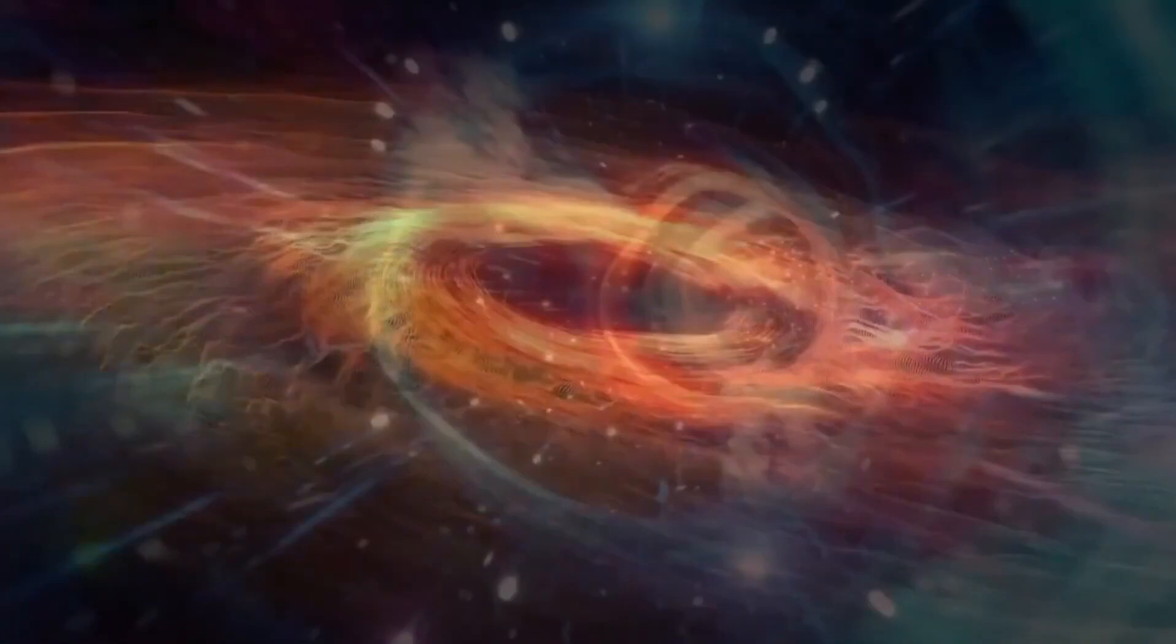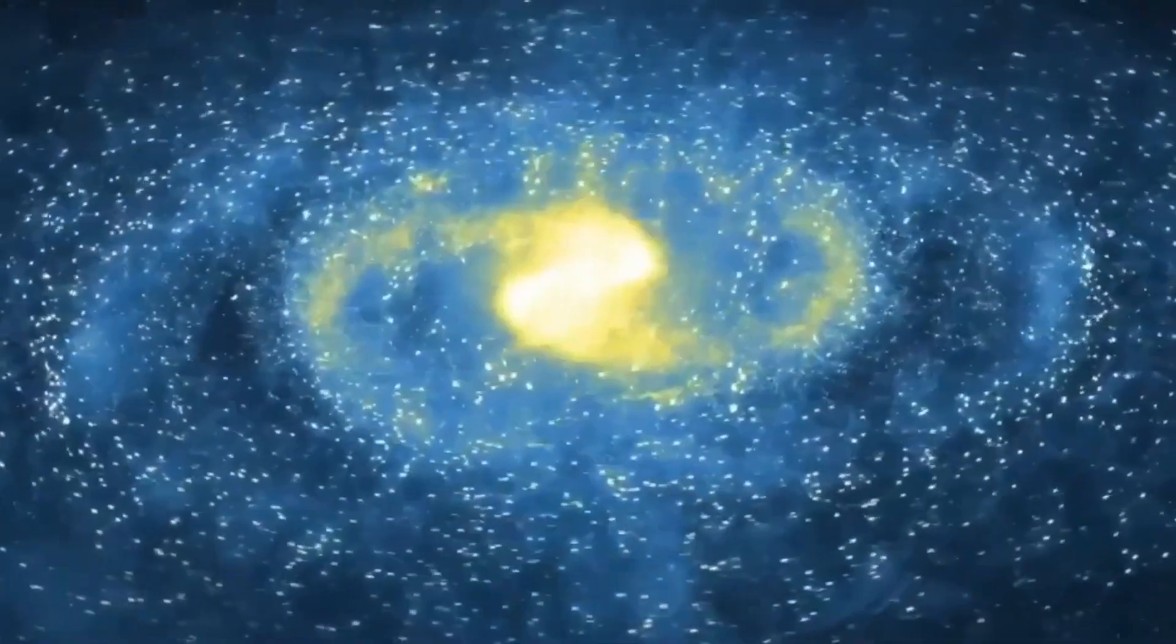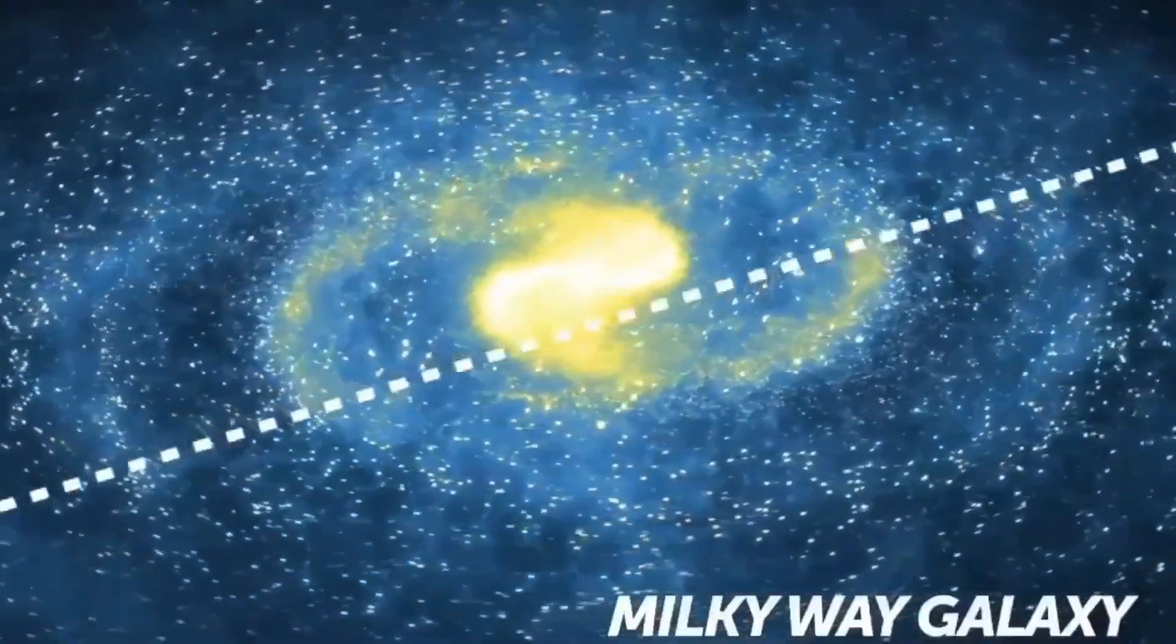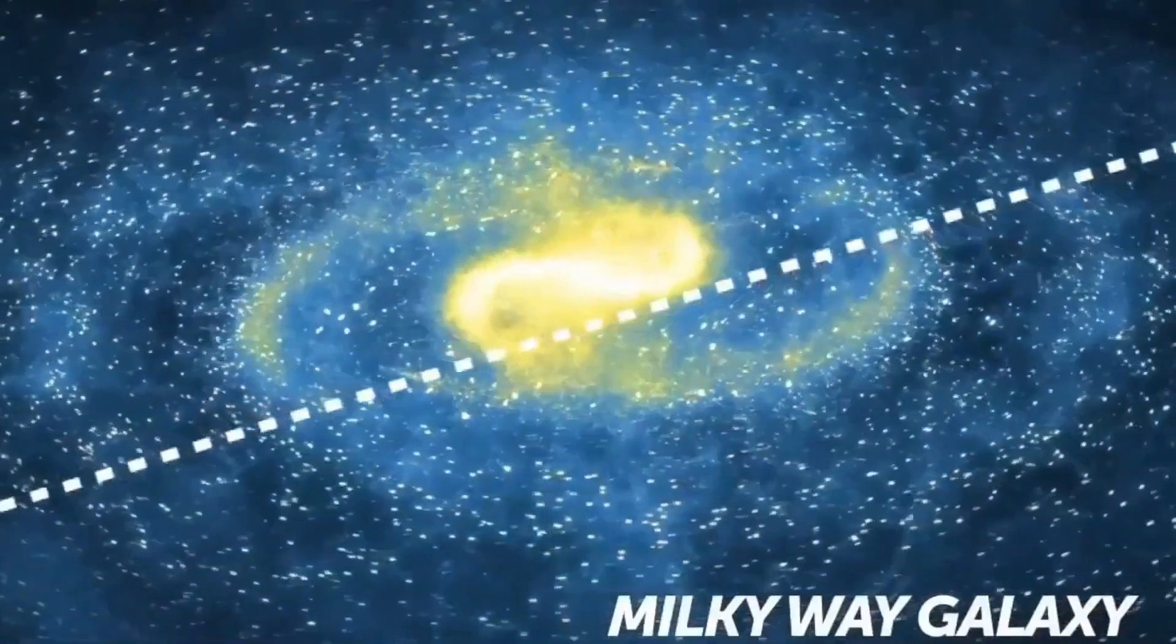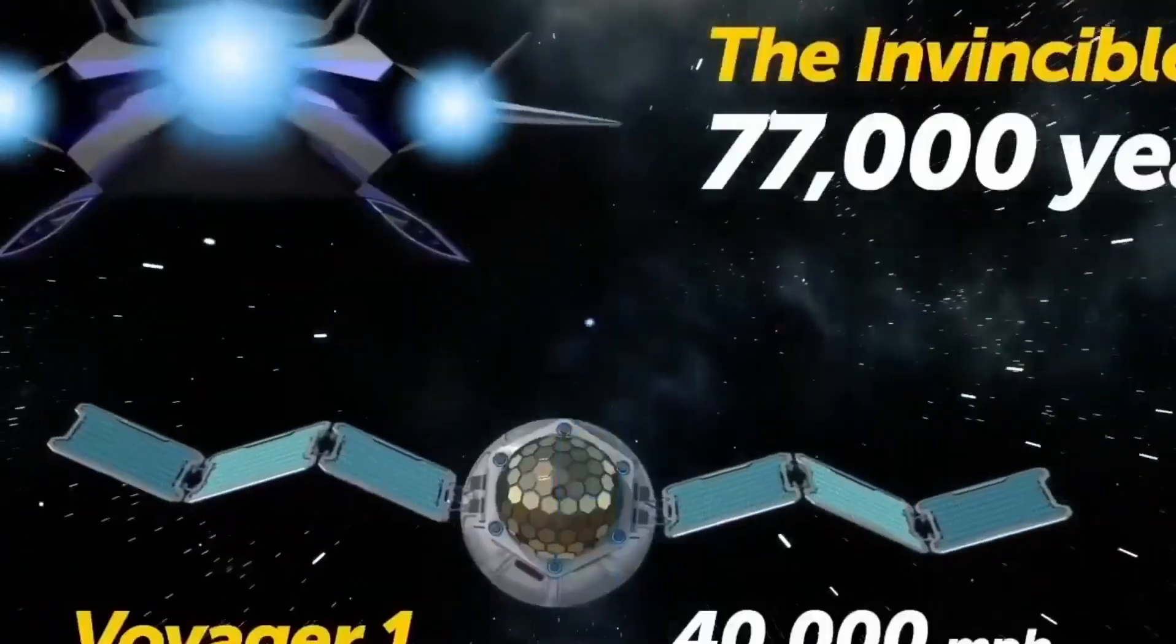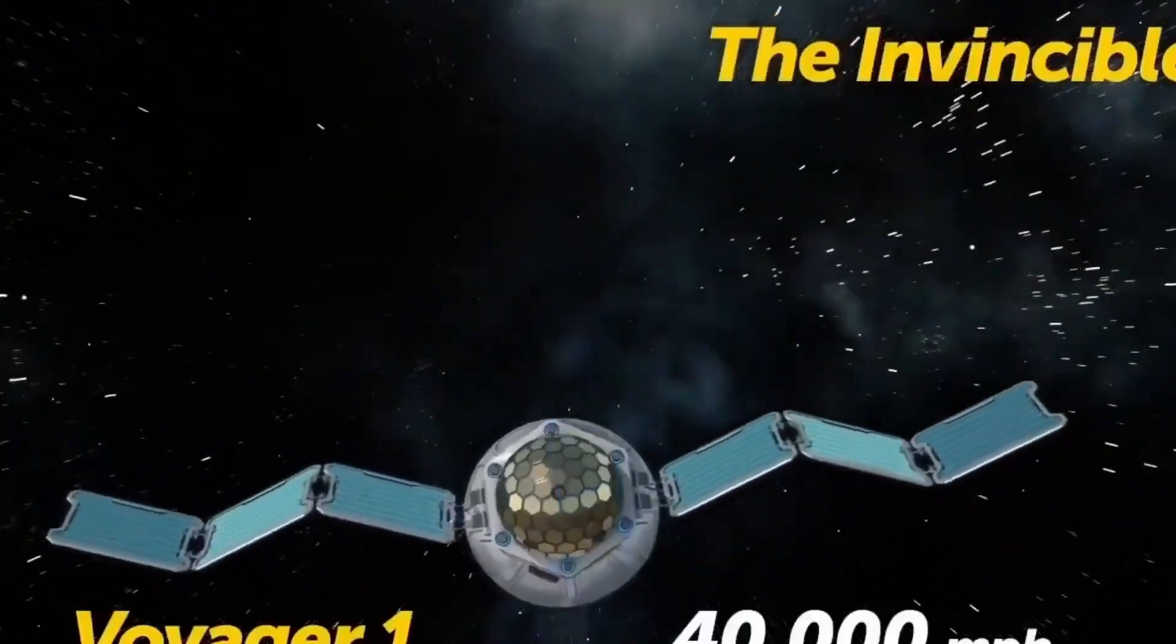On the other end of the spectrum, we have supermassive black holes, colossal entities that dwarf our sun by millions, even billions of times. The formation of these behemoths remains a subject of speculation, but we do know they occupy the center of most large galaxies, including our own.